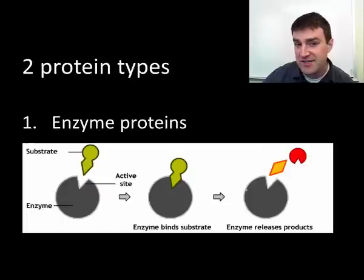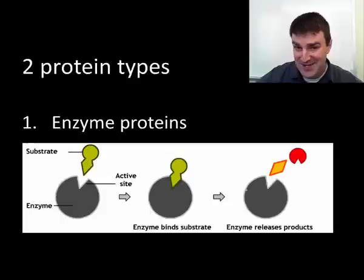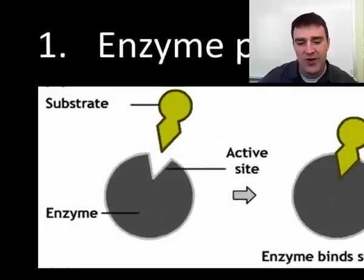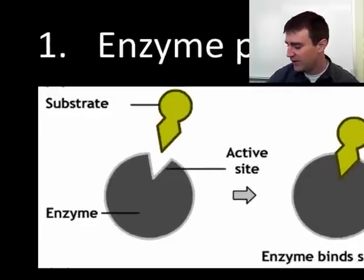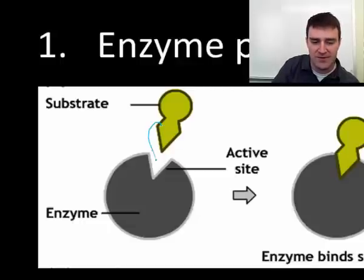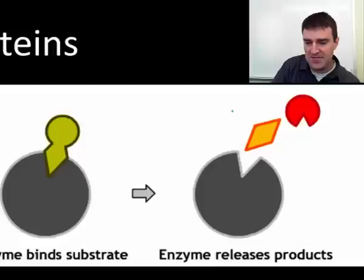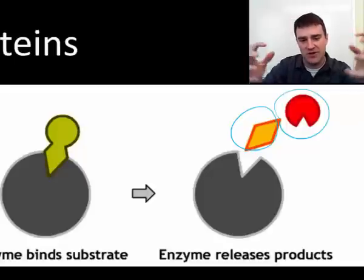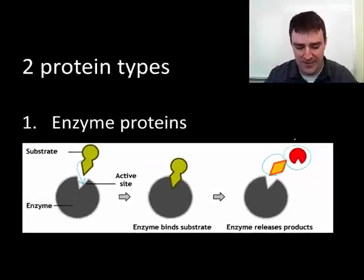Let's finish by talking about two broad types of proteins. First, enzymes. Enzyme proteins can interact with chemicals and help turn them into other chemicals — they speed up the chemical reactions of the chemicals they bind with. Here's a cartoon of a chemical fitting very precisely into an enzyme that has the shape to fit it. Once they fit together, the enzyme helps the chemical turn into smaller chemicals. Some enzymes cut up the chemicals they interact with; other enzymes put together smaller chemicals and release the bigger chemical they've helped assemble.